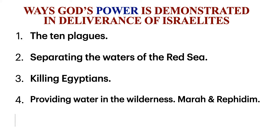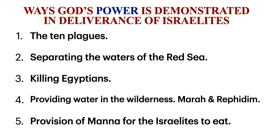Number five, God's power is demonstrated in the provision of manna for the Israelites to eat. The people of Israel lacked food while in the wilderness, and God provided manna. Each morning the people gathered their day's portion. Manna was a white seed-like substance that tasted like biscuits made with honey.